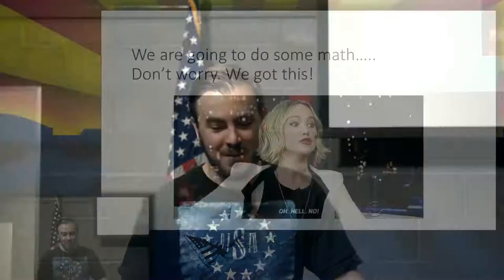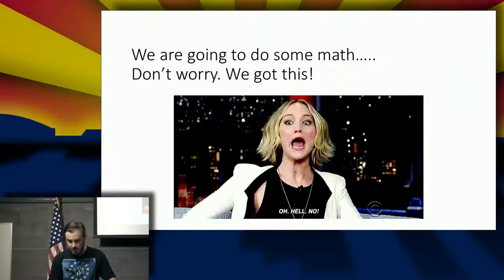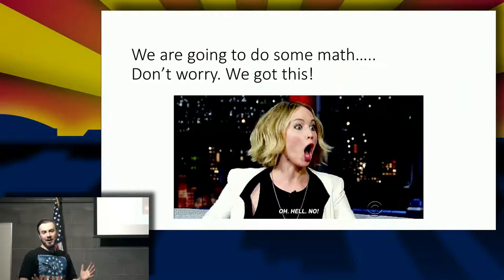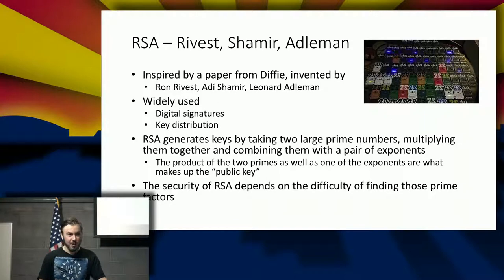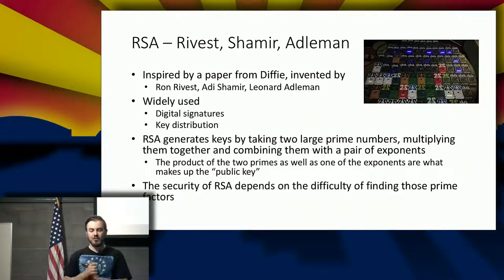This is the point where we do some mathematics. We're going to step through this and I will do most of the math for you. What we're going to talk about now is the typical known algorithm in public key cryptography — RSA. RSA was inspired by a different human paper. It was written by Ron, Addy, and Leonard. We use it nowadays widely in digital signatures and key distribution. RSA uses large prime numbers, and what we're doing is using a mathematical relationship between them to create a pair of exponents.